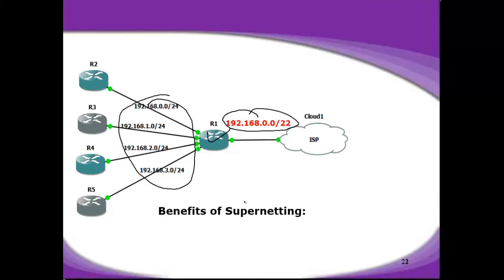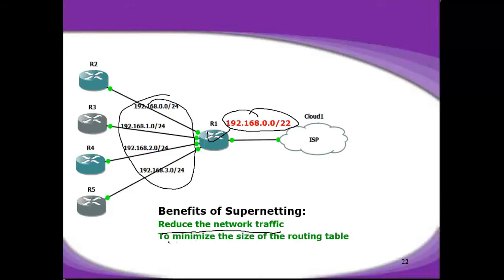The benefits of supernetting are that you reduce network traffic, because instead of advertising 4 networks you only advertise one entry to the corporate network. The second and major benefit is that it minimizes the size of the routing table. Routers in the corporate network have less burden, since instead of advertising hundreds of networks you advertise just a few summarized entries depending on your supernetting calculation.